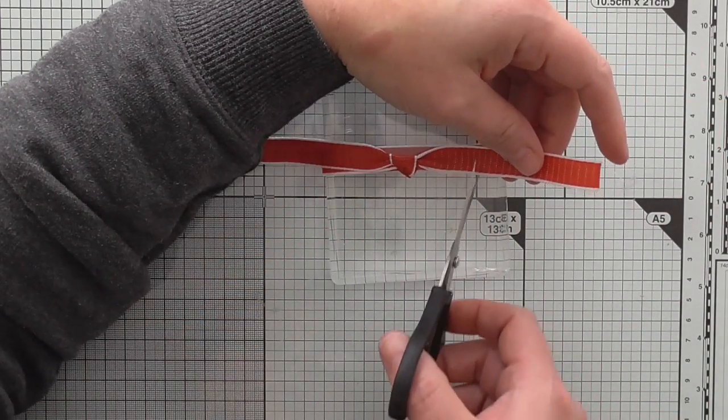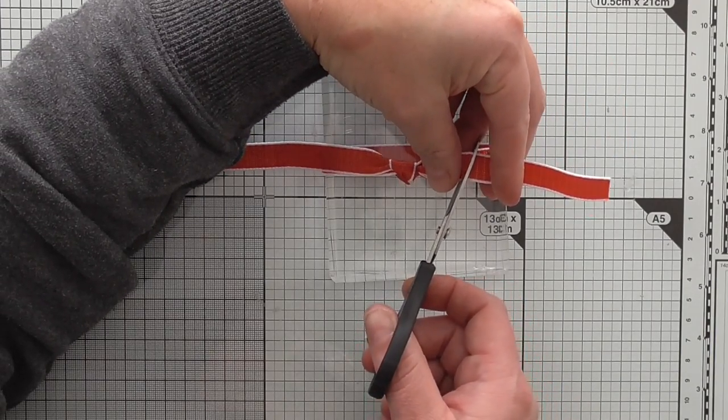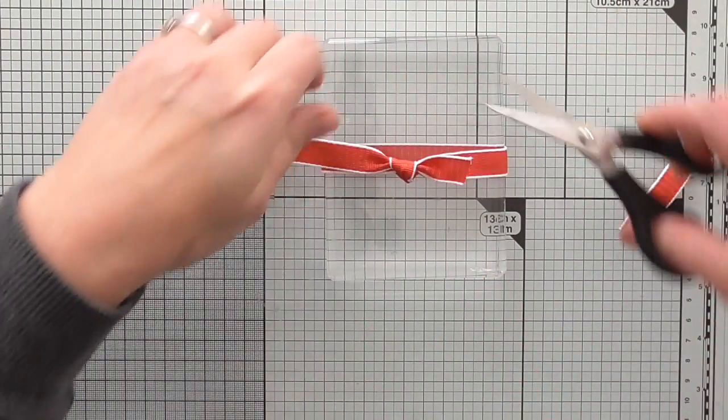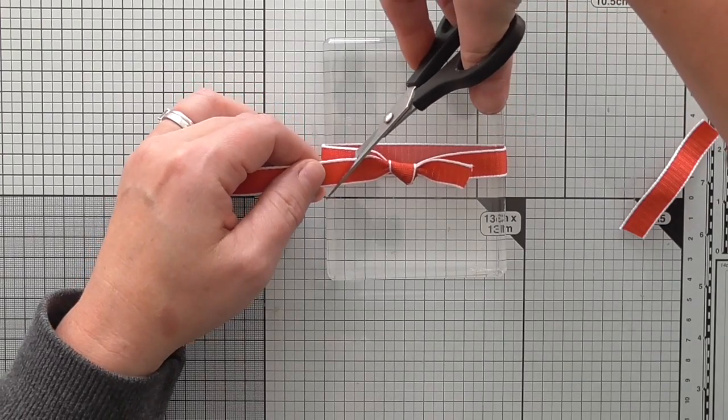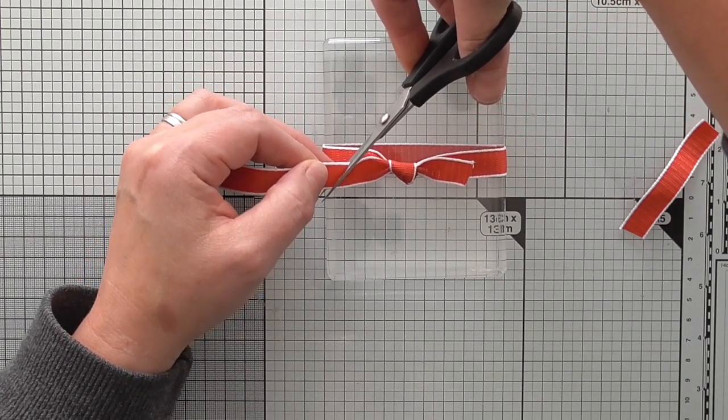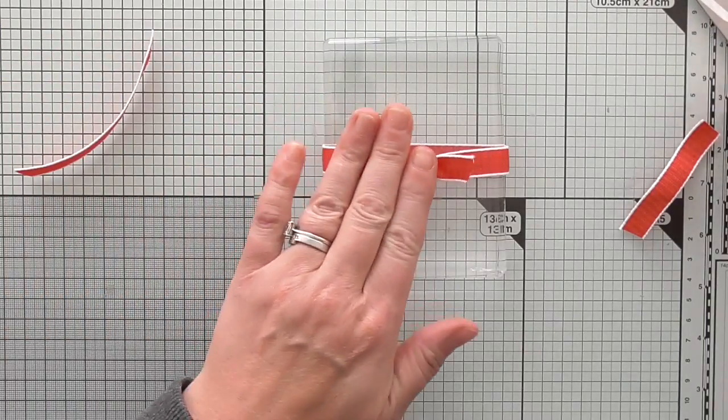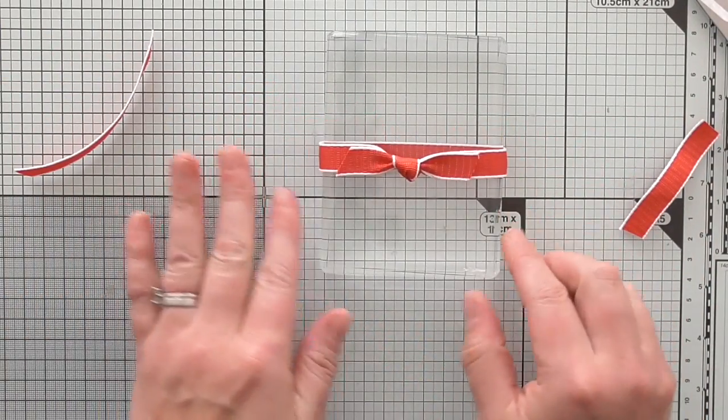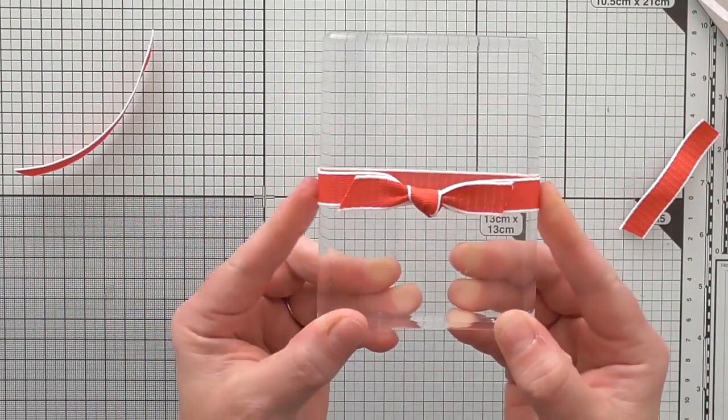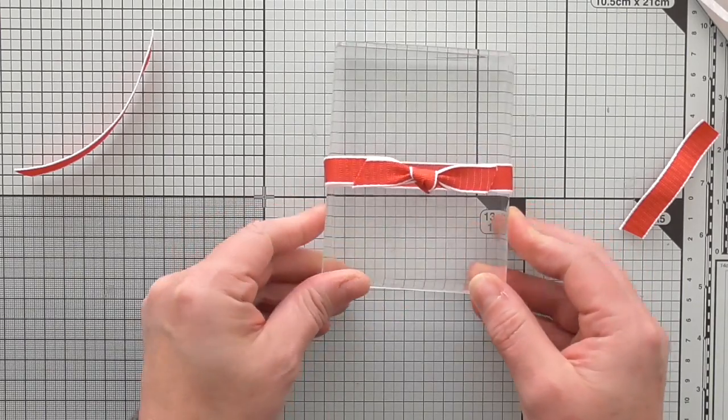And then all you've got to do is trim your ends. I have to trim them at an angle for some reason, I don't know why, I just like to do it. And these look awesome on your cards. If you're not very good at bows or you're under pressure, I think the square knot is an awesome alternative. Give it a try.